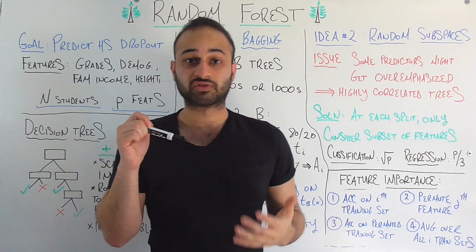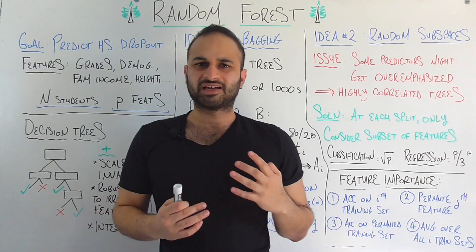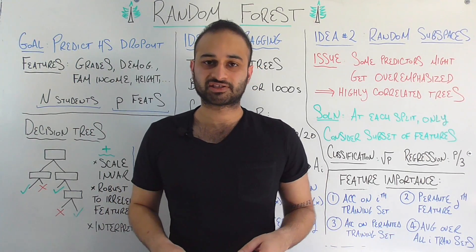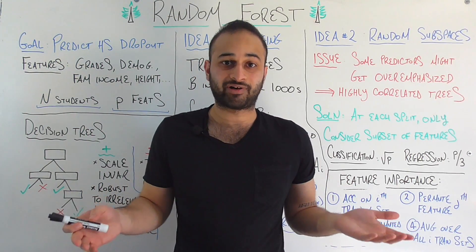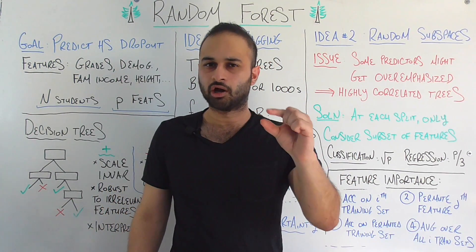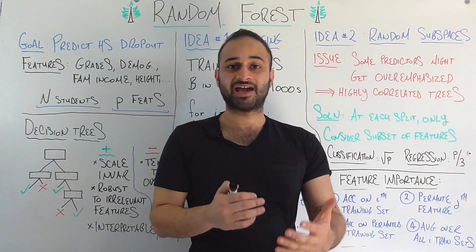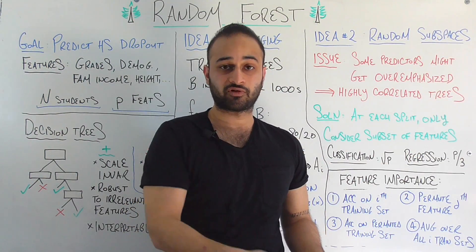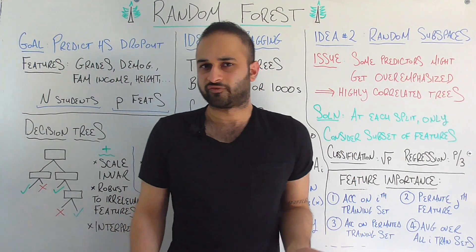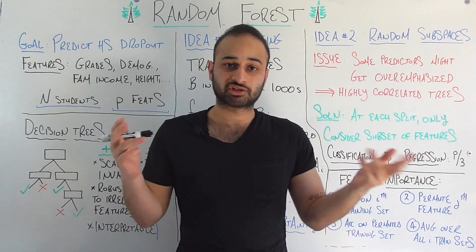Now let's say I'm finding the feature importance for height. I do the same thing — get the accuracy on the i-th training set, permute all the heights — but because height was not an important factor to begin with, it probably won't matter much. The accuracy on the permuted training sets won't change by a lot because height wasn't being used for anything anyway. So the change in accuracy averaged over all i training sets is going to be rather low. The more important features are those where accuracy changes by a lot; the less important features are those where accuracy barely changes — meaning the models weren't really using that feature.